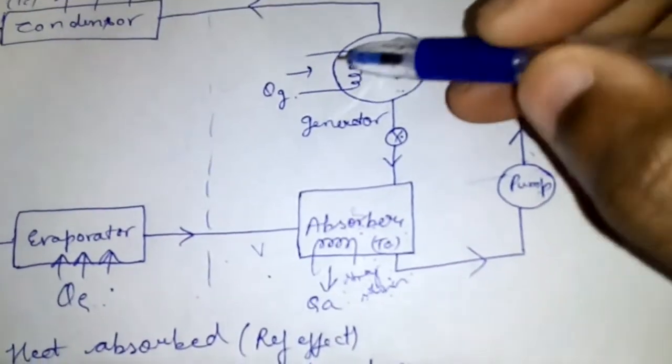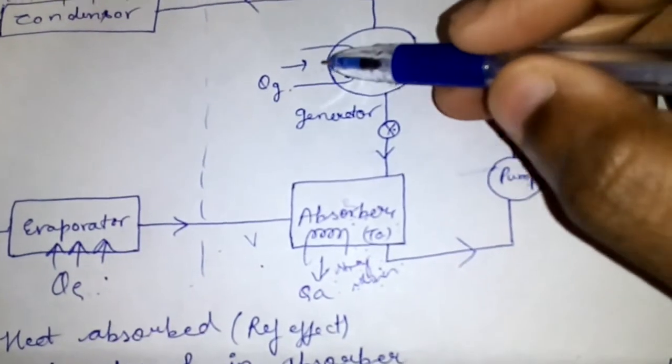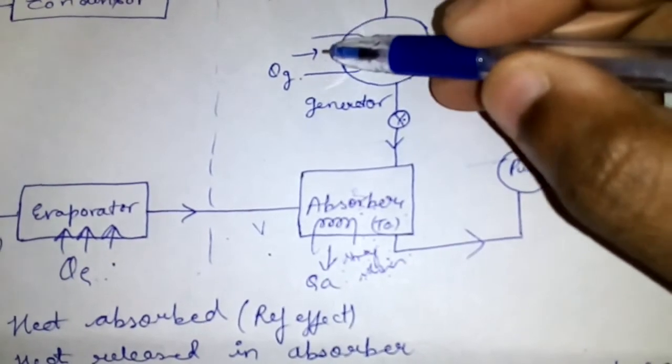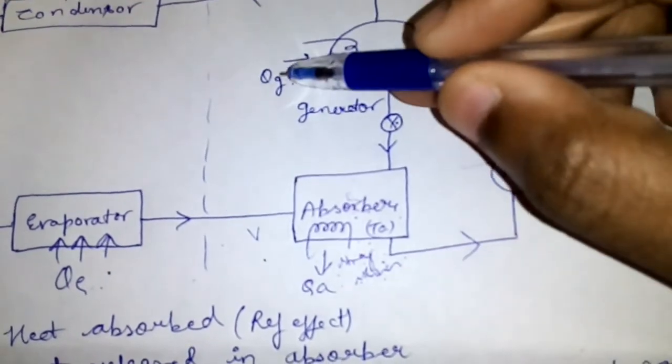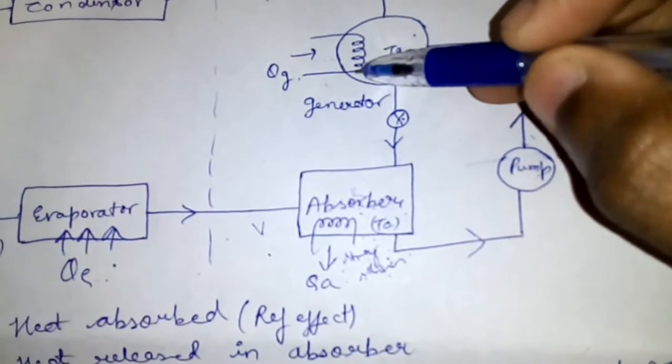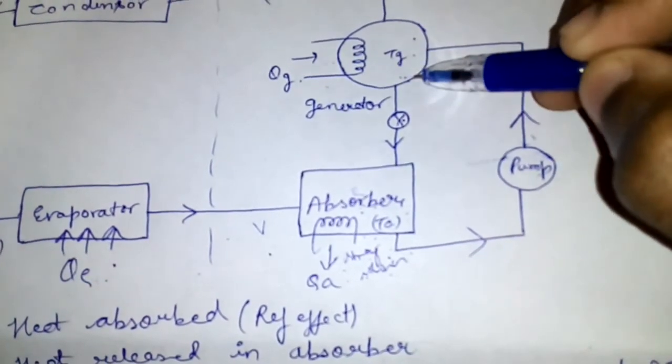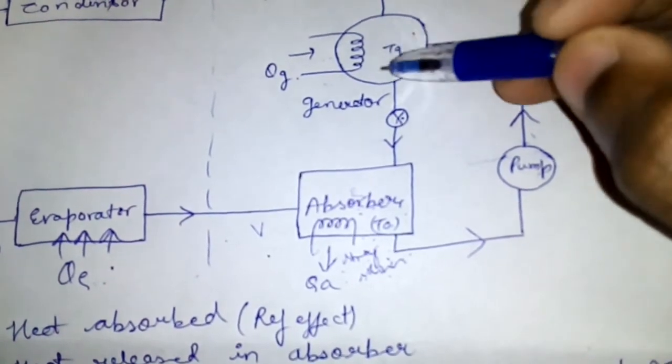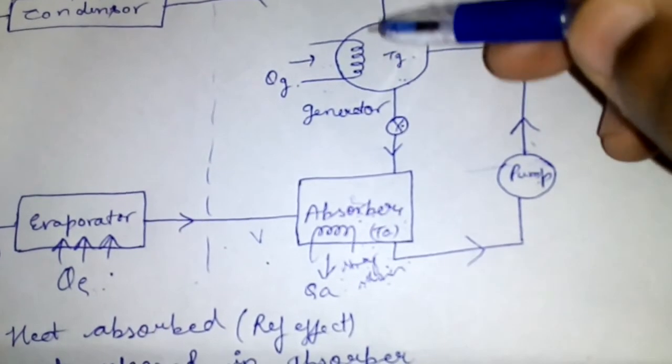Here the generator uses low grade energy. Most commonly in India and abroad, we use solar energy as the low grade energy. It is given into the generator. The generator takes the heat, the liquid gets converted and gets separated.